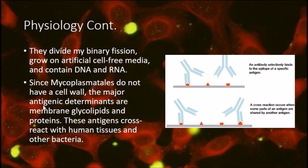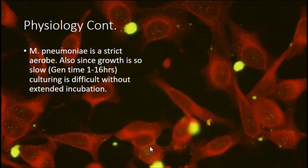Since mycoplasmas do not have a cell wall, the major antigenic determinants are membrane glycolipids and proteins. These antigens cross-react with human tissues and other bacteria. This type of bacteria is also a strict aerobe, and since growth is so slow — with a generation time of one to six hours — culturing is very difficult unless you have an extended incubation time of several days or even weeks.